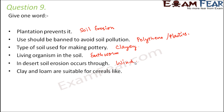Clay and loam are suitable for cereals — which type of cereals prefer soils with high water retention capacity? Wheat is one such example. Rice is another example of a cereal that prefers clay soil because it requires water logging — it needs excess water.